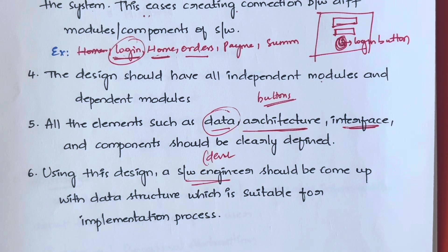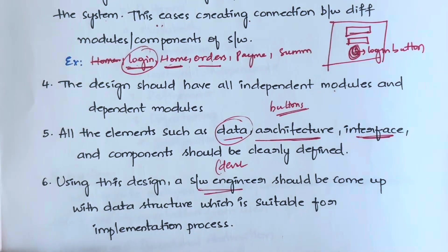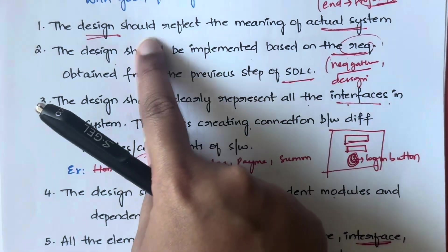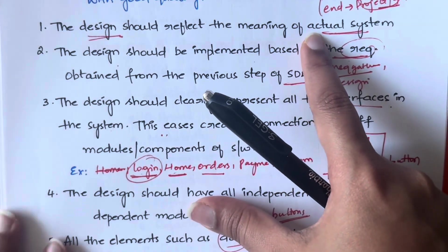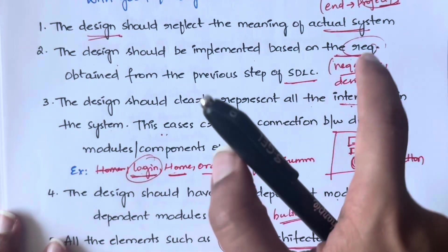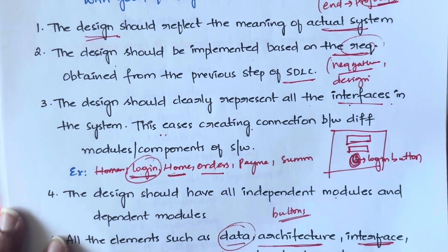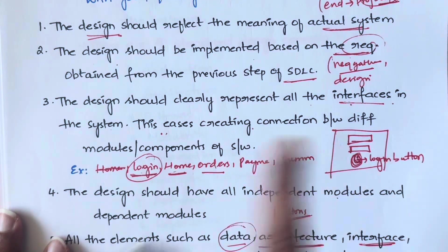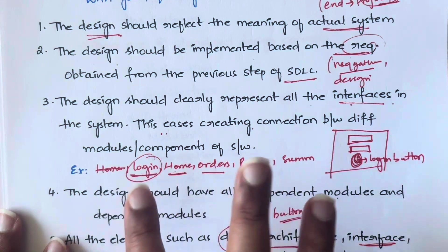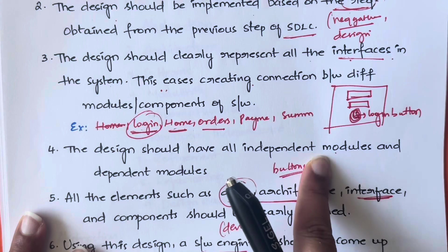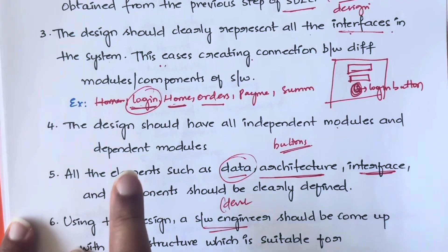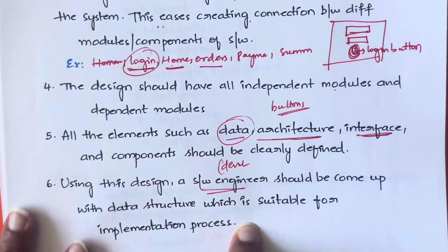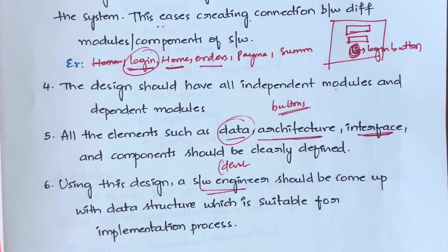So these are the six guidelines you have to follow while designing to get a design with good quality. First, the design should reflect the meaning of the actual system. Second, it should be implemented based on the requirements gathered from the requirements-gathering phase. Third, the design should clearly represent each and every interface in the system so you understand how every screen interacts with each other. Fourth, it should show all independent and dependent modules. Fifth, all elements — data, architecture, components — should be clearly defined. Sixth, the software engineer should be able to figure out the data structure from the design.